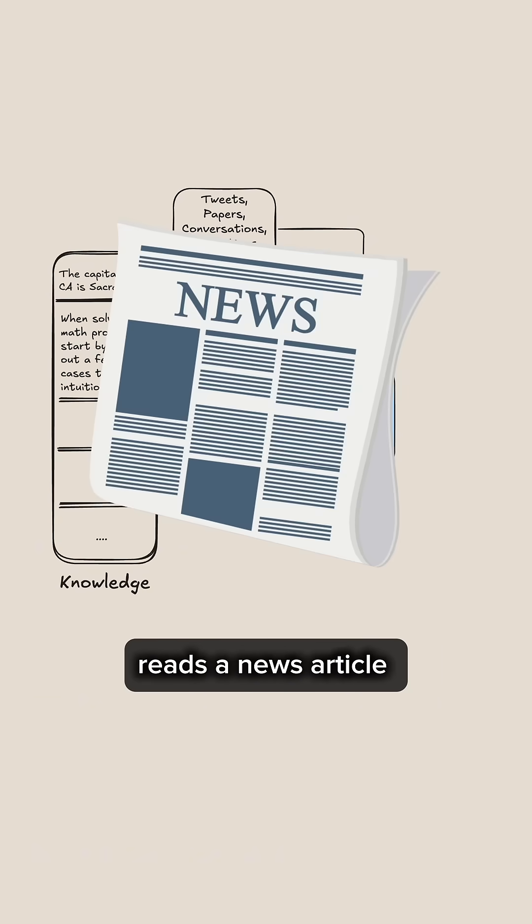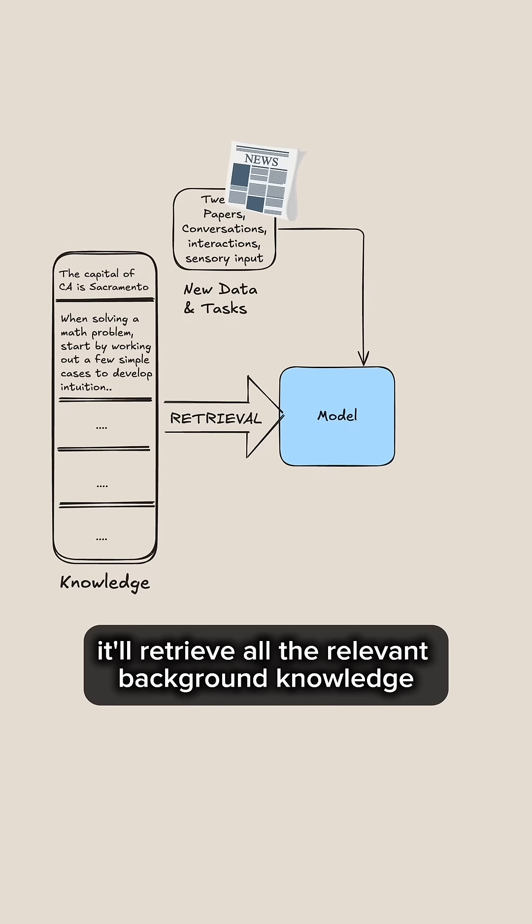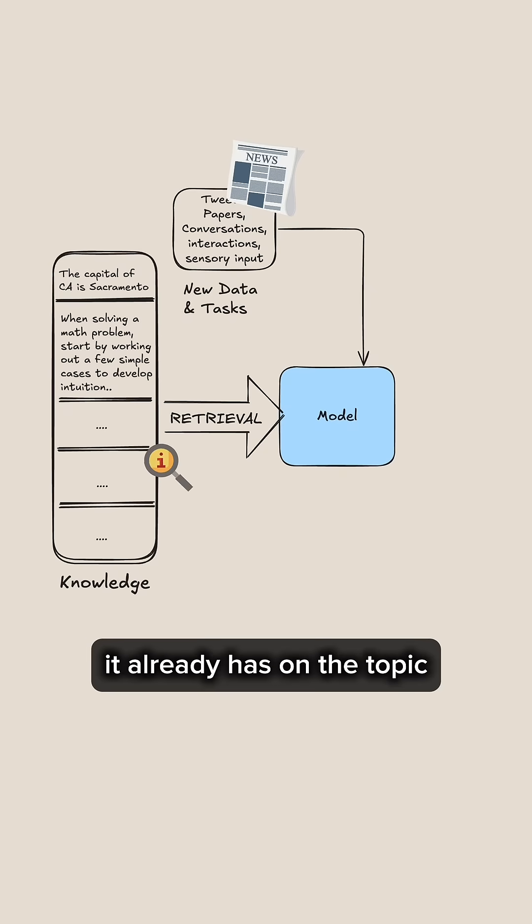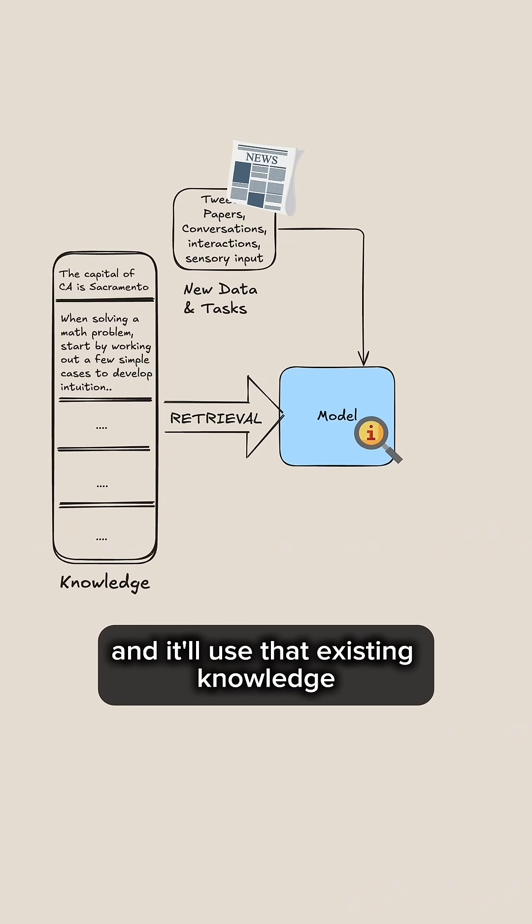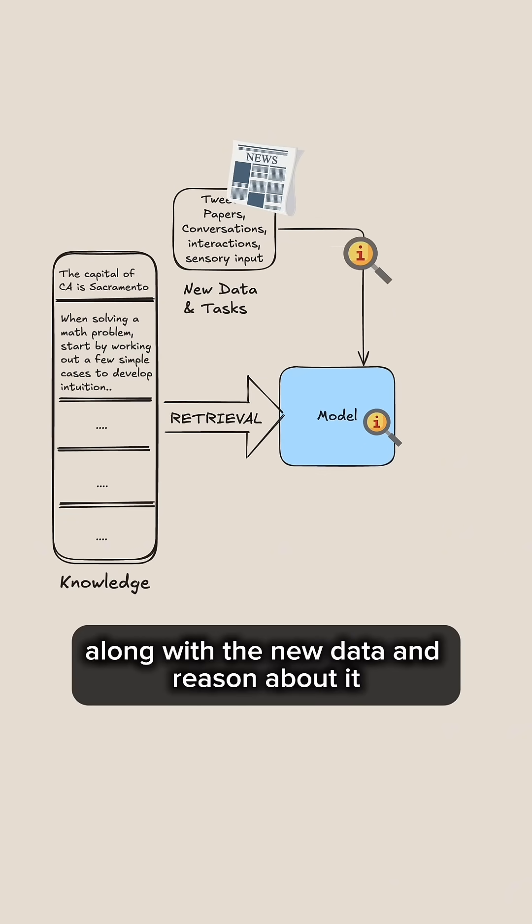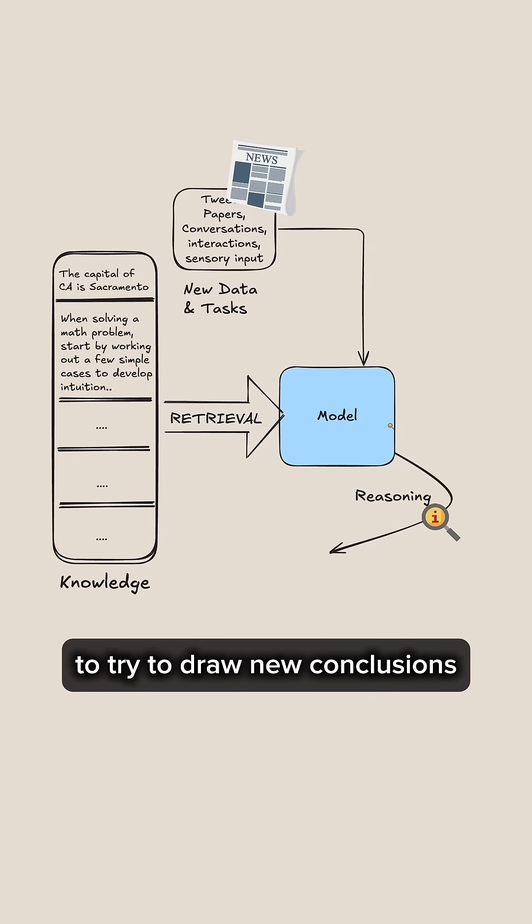So imagine an agent reads a new article and wants to learn from it. It'll retrieve all the relevant background knowledge it already has on the topic and use that existing knowledge along with the new data and reason about it to try to draw new conclusions.